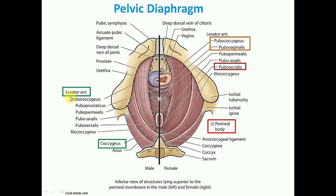The levator anae muscle is divisible into two parts: the pubococcygeous part and the iliococcygeous part. Behind it is the ischiococcygeous or coccygeous part of the pelvic diaphragm. In the female, the pubococcygeous part of levator anae is important and is divisible into a number of muscle fibers. Some fibers are inserted into the perineal body, which is the central point of the perineum. Some fibers form a sling around the vagina, forming a sphincter known as pubovaginalis or sphincter vagini fibers.